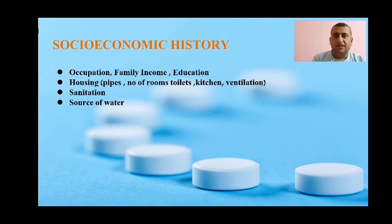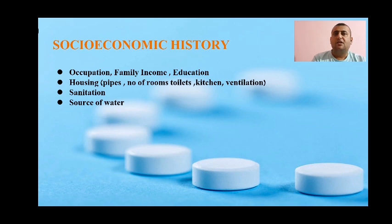In socioeconomic history, ask about occupation, family income, and education. Ask about housing — what type of housing it is, whether it is kaccha or paka house, the number of rooms, and whether there is provision for toilet, kitchen, and ventilation. Also ask about sanitation facilities and source of water, such as how far it is from the toilet or home.